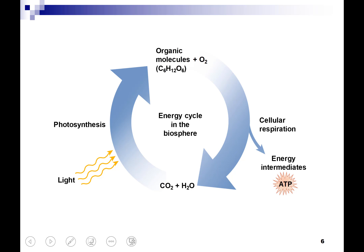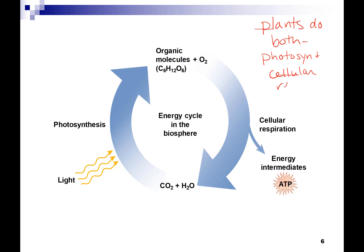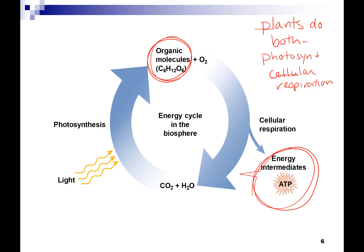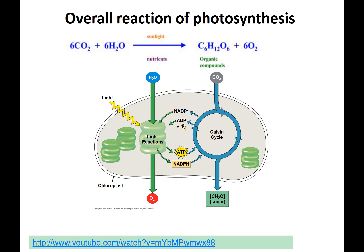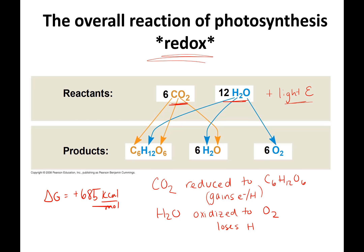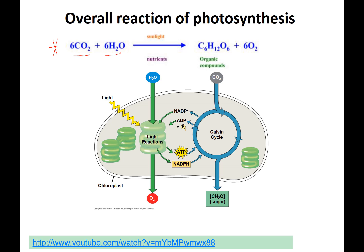Plants have to do both photosynthesis and cellular respiration. The point of photosynthesis is to make organic molecules — it is not an energy-producing reaction. ATP is made and then used within the process. Cellular respiration is what produces your ATP. So the overall equation you must know is: CO2 and water, with sunlight, make sugar and oxygen.